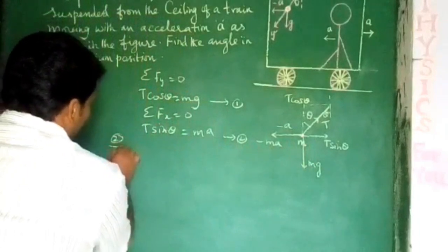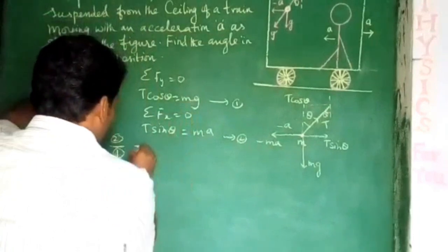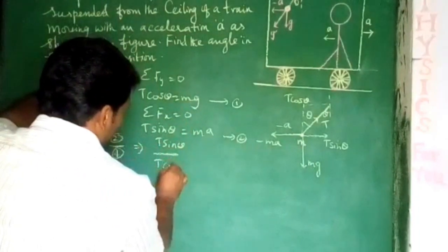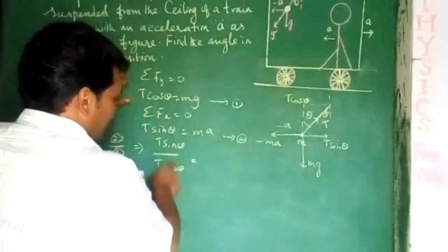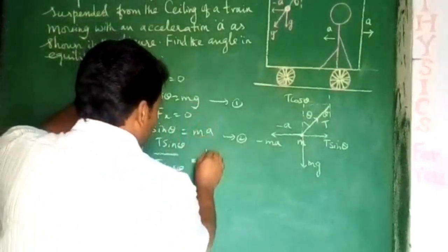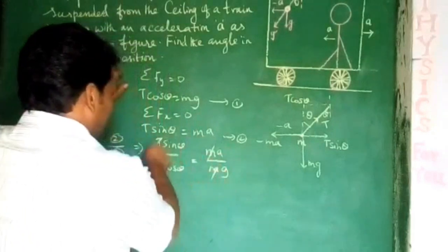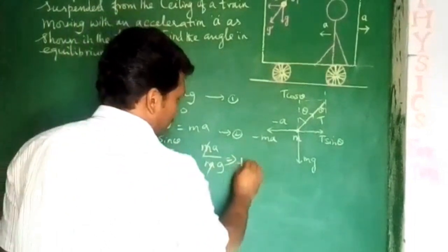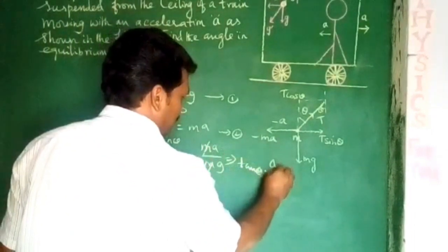Then, dividing equation 2 by equation 1: T sin theta divided by T cos theta equals mA divided by mg. On the left-hand side, sin theta divided by cos theta is tan theta. So, tan theta is equal to A by G.